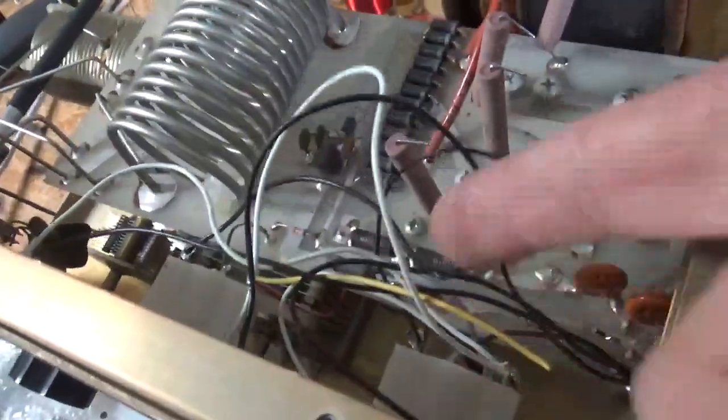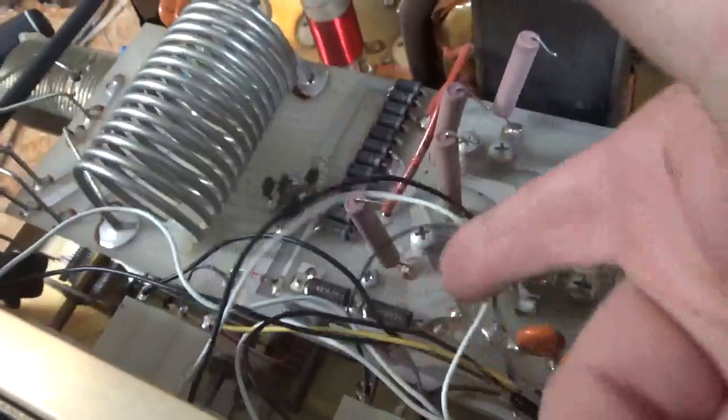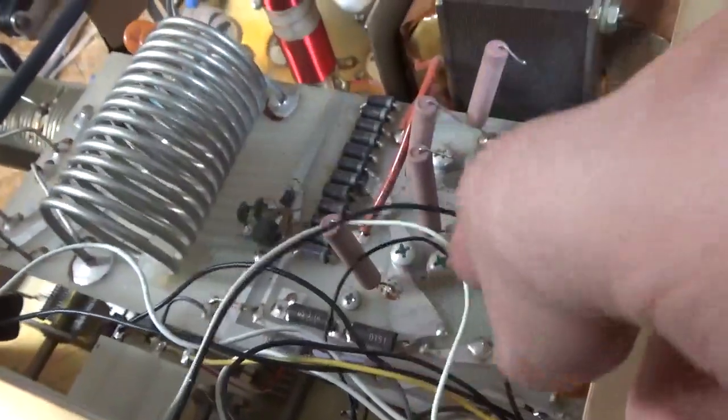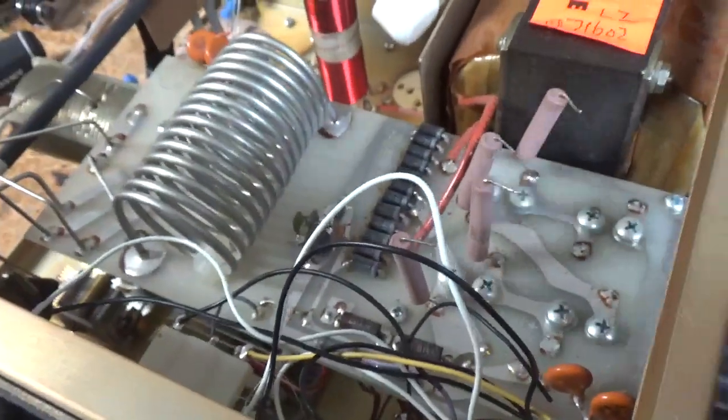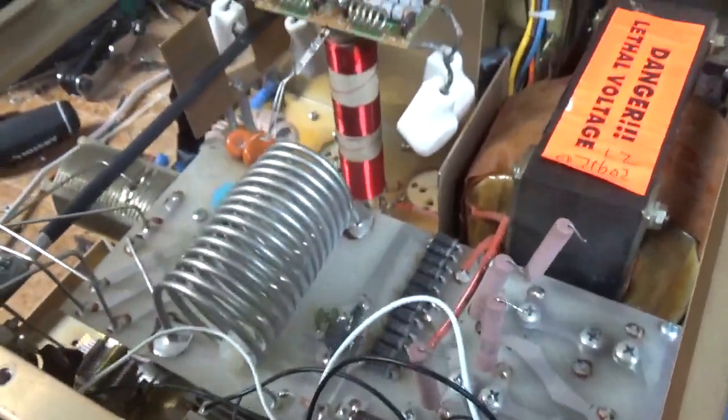Someone did some crazy wiring for meter lamps. These are hanging over the edge of the filter caps, big no no. So let's take all that out, clean it up, and put LEDs inside the meter movements.